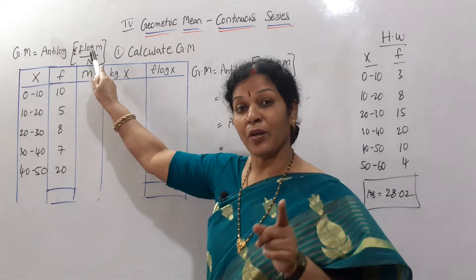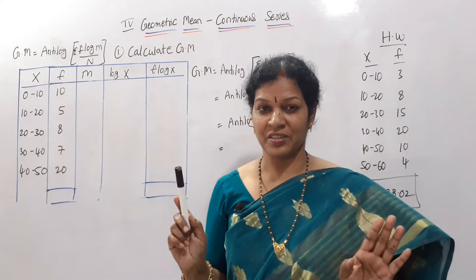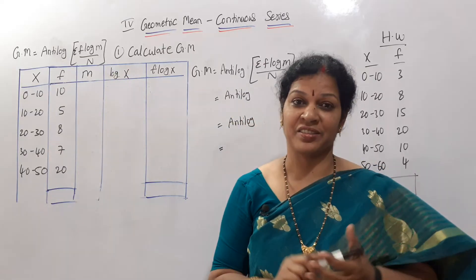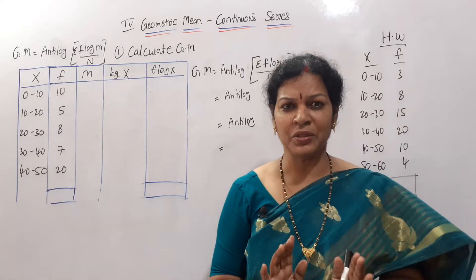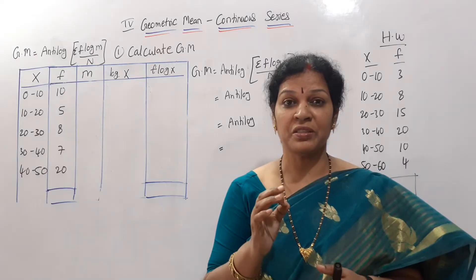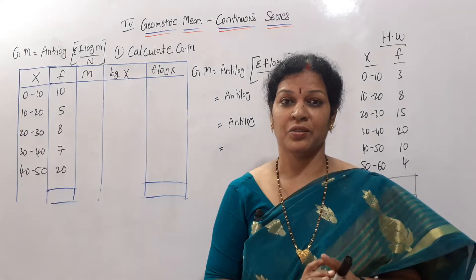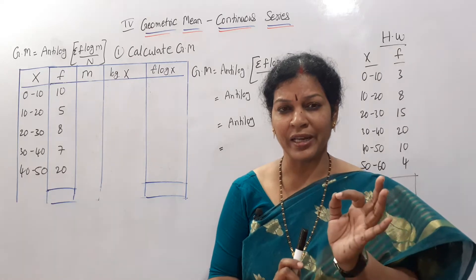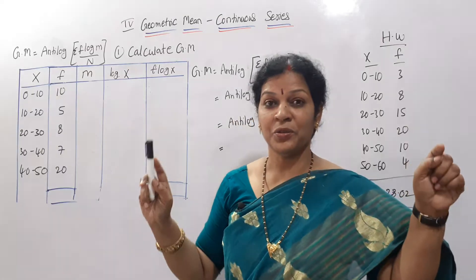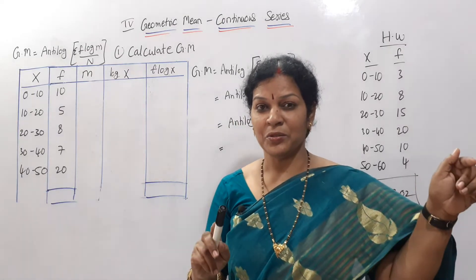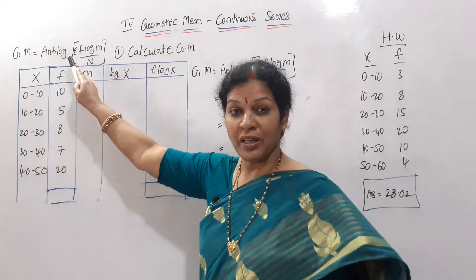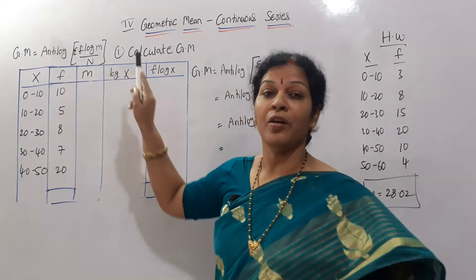In discrete series it was f into log x, but now here it is f into log m. In continuous series we do not take the class intervals directly like 10 to 20, 20 to 30. Instead we take the mid value, which represents x. That is why the formula has a slight change: f into log m. So remember this formula: anti-log of sigma f into log m by n.